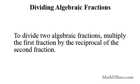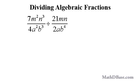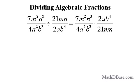To divide two algebraic fractions, multiply the first fraction by the reciprocal of the second. Let's divide 7m squared n cubed over 4a squared b cubed by 21mn over 2ab to the fourth. The reciprocal of 21mn over 2ab to the fourth is 2ab to the fourth over 21mn. So the problem now is to find the product of 7m squared n cubed over 4a squared b cubed and 2ab to the fourth over 21mn.